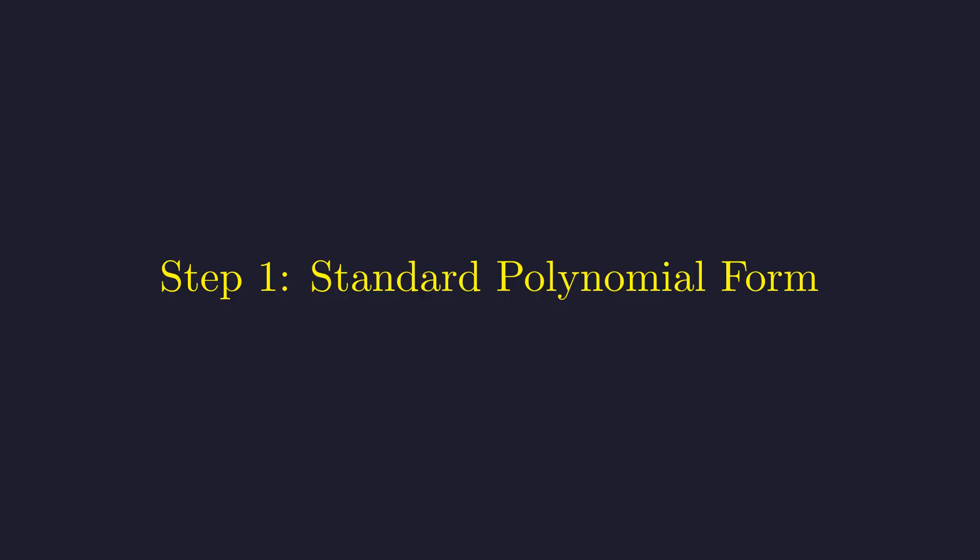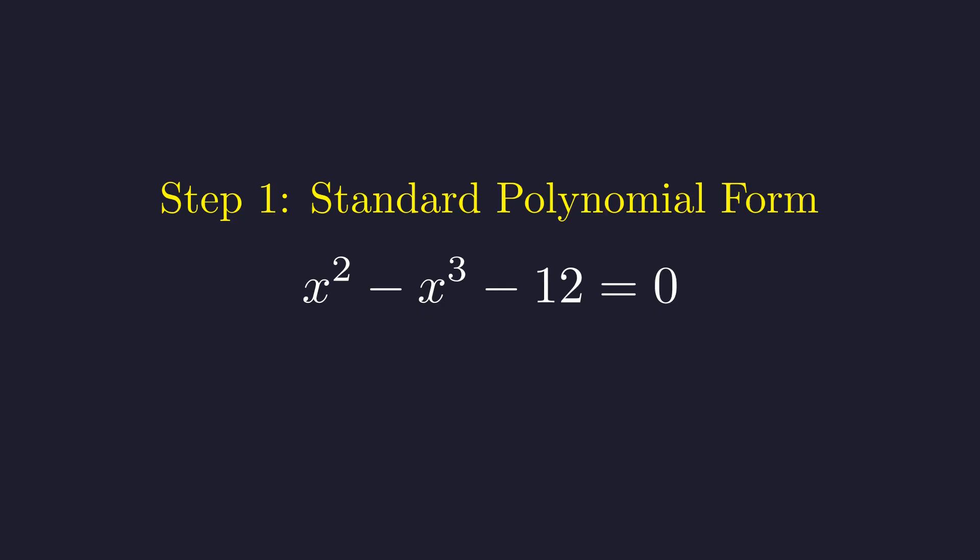To begin, we'll rearrange the equation into standard polynomial form. Subtracting 12 from both sides gives us this. By convention, the leading term of a polynomial should be positive, so we multiply the entire equation by negative 1 to make the leading term positive. Finding where the two curves intersect is now identical to finding the roots of this cubic equation.